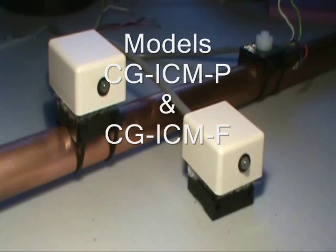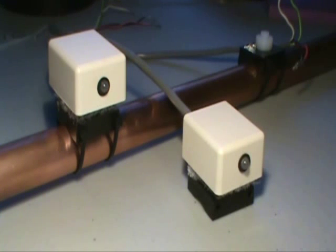Here you see the two different configurations of the model CGICM. In the foreground, you see the model CGICM-F for flat surface mounting. In the background, you see the CGICM-P, obviously for pipe mounting. The only difference between these two configurations is the hardware that we supply in the pouch to provide the mounting suitable for the choice of pipe or the choice of a flat surface.